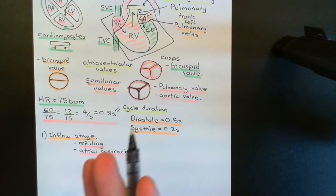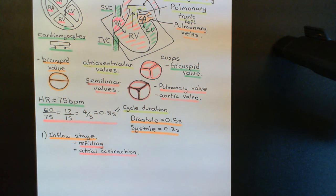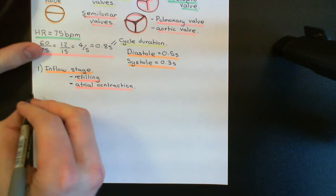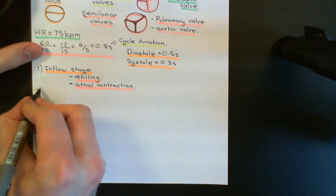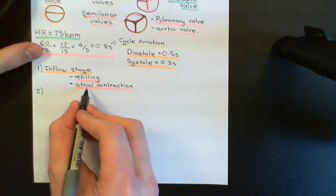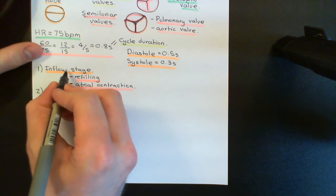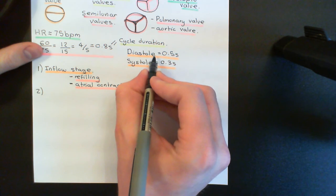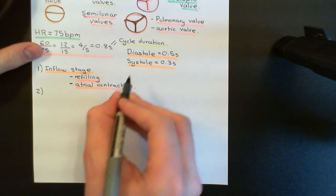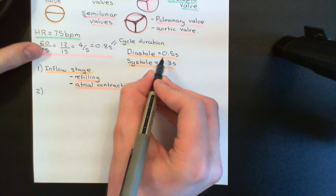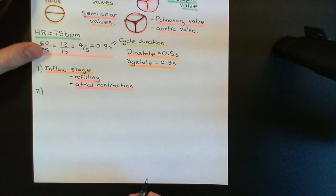That's the end of the inflow stage - the right and left ventricle now have as much blood as they will ever have. All of the inflow stage is considered diastole, even though the atria contract at the end of it. Remember, everything's told from the perspective of the ventricles - the atria contracting isn't the ventricles contracting, so this is still considered diastole.